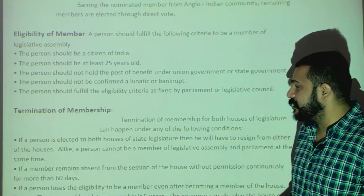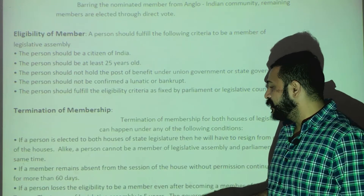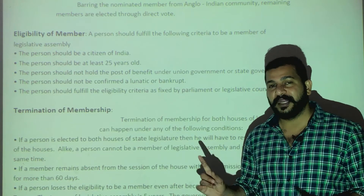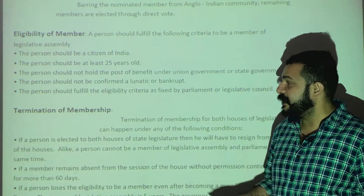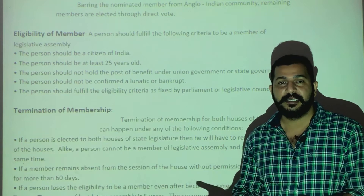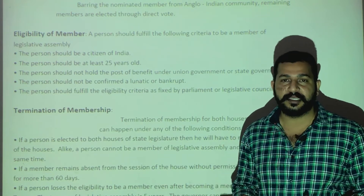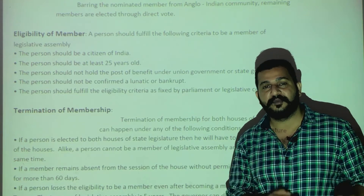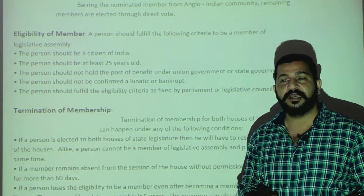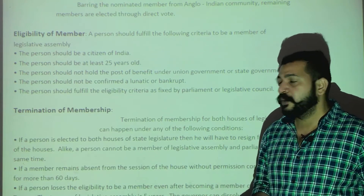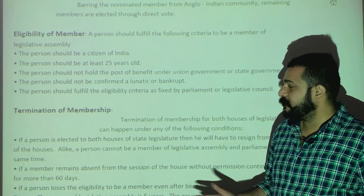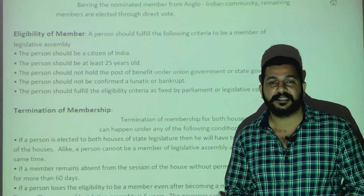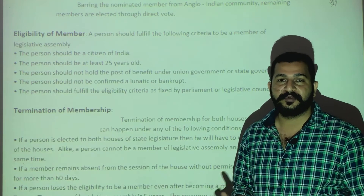Third, if a person loses the eligibility to be a member even after becoming a member of the house — if they no longer meet the criteria required to be a member — their membership is terminated. Now regarding tenure: the normal tenure of a Legislative Assembly member is 5 years.